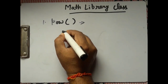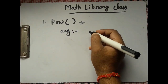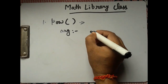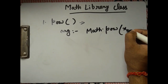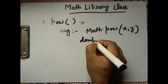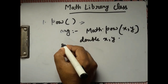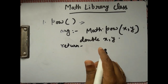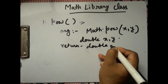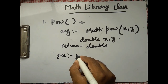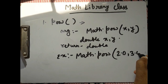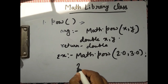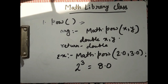The Math.pow() function takes two arguments, both of type double — Math.pow(x, y) where x and y are both double — and the return type is also double. For example, Math.pow(2.0, 3.0) will return 2 to the power 3, which is 8.0.